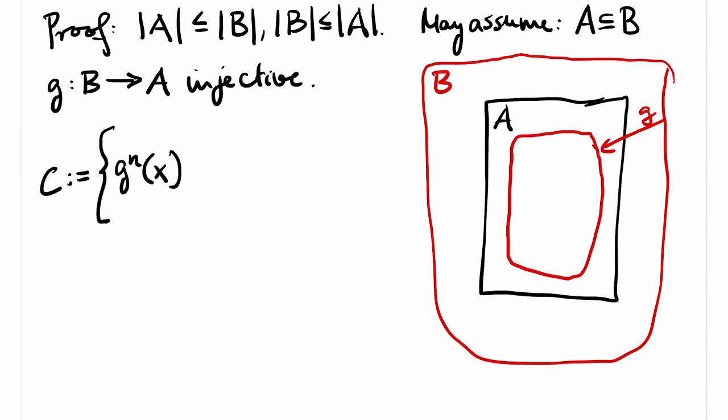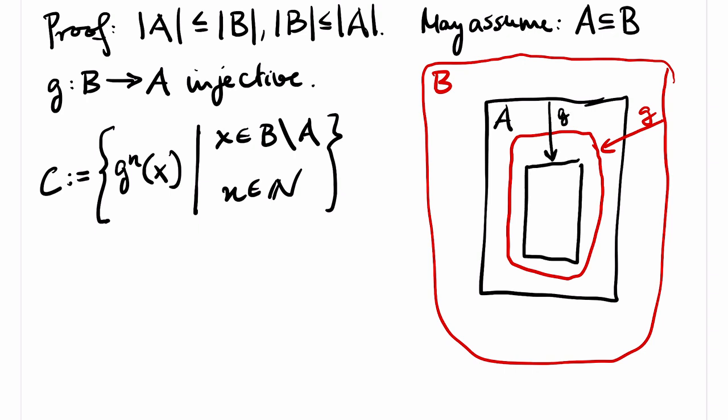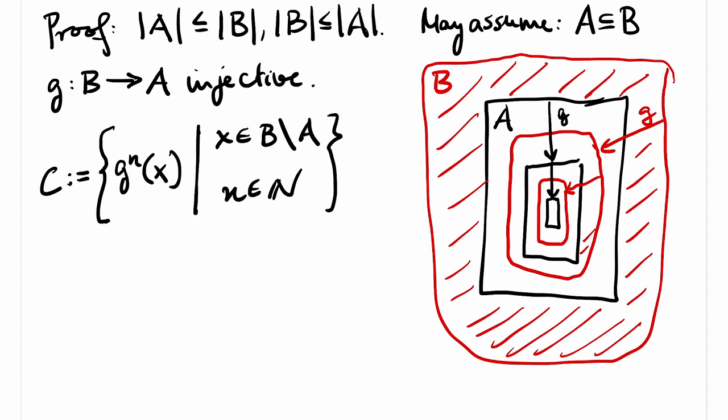The key of the proof is the definition of the following set C. Let me state how to read this definition. We have here the union of the image of the complement of A in B, under applying G a finite number of times. So for n equals zero, we obtain the complement of A in B itself. Then we have the image of the complement of A in B, and then we have the image of the image, and so on. And C is the union of all these sets. So in the picture, C is represented by the red area. Note that C is contained in B, and the complement of C in B is contained in A. This is clearly visible in the picture.